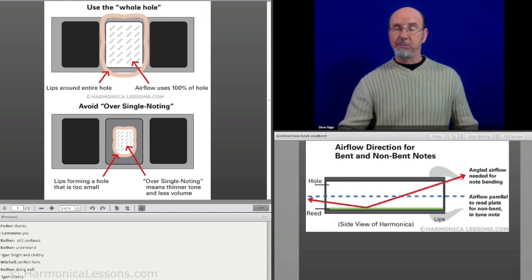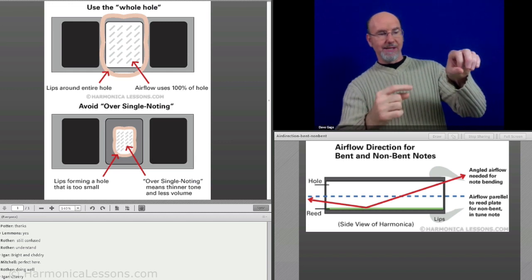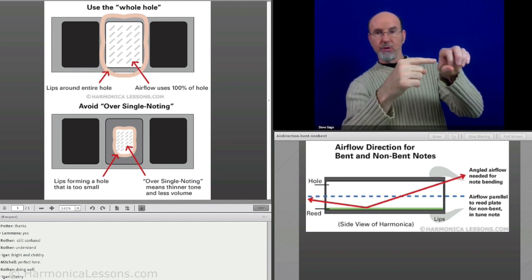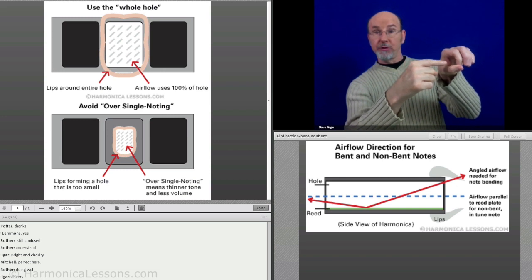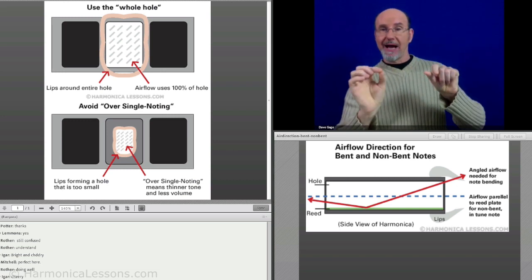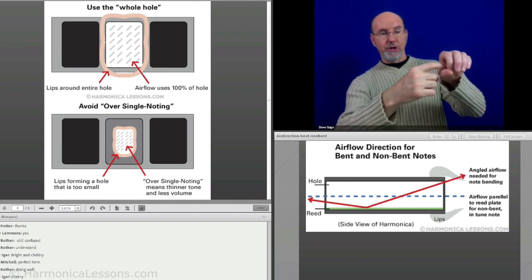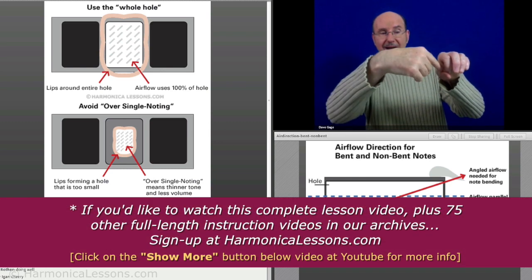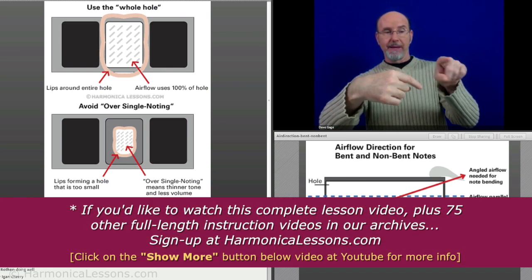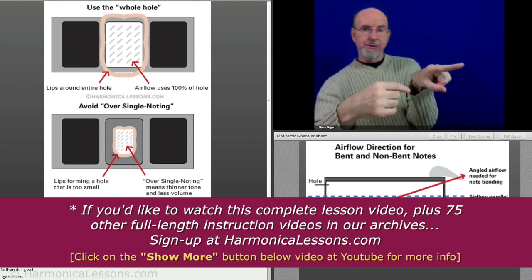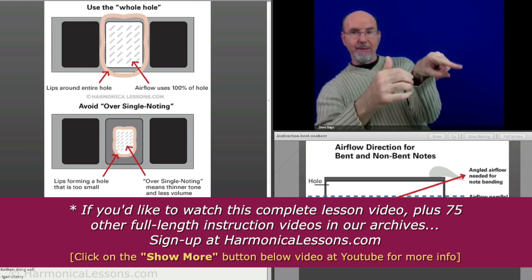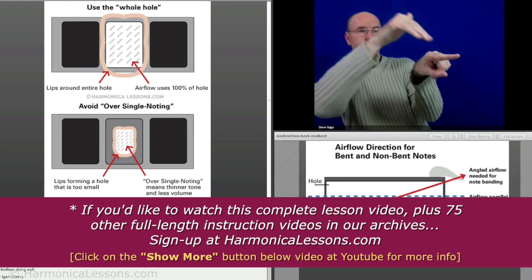So if you look at the graphic below me, the point is that if air goes straight through the hole parallel to the reed, you get a nice in-tune note. When you start to push and pull the air at an angle, here's the reed vibrating inside, when you push and pull the air at an angle, that's basically bending.